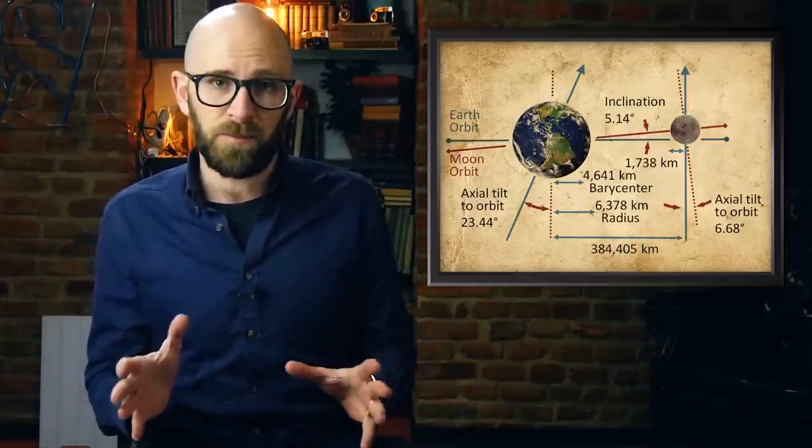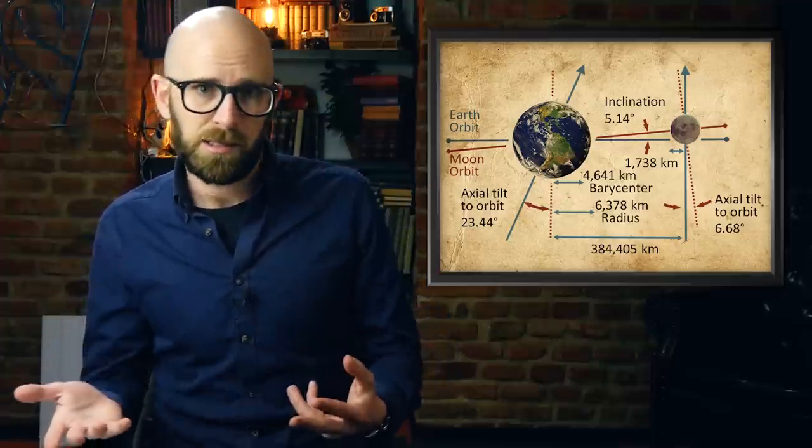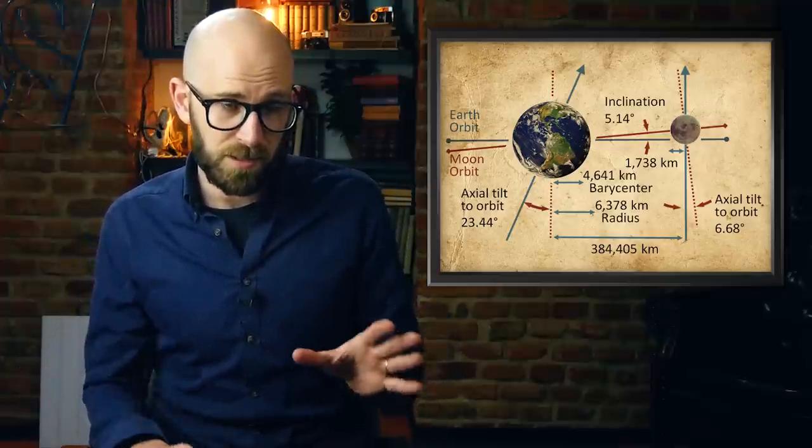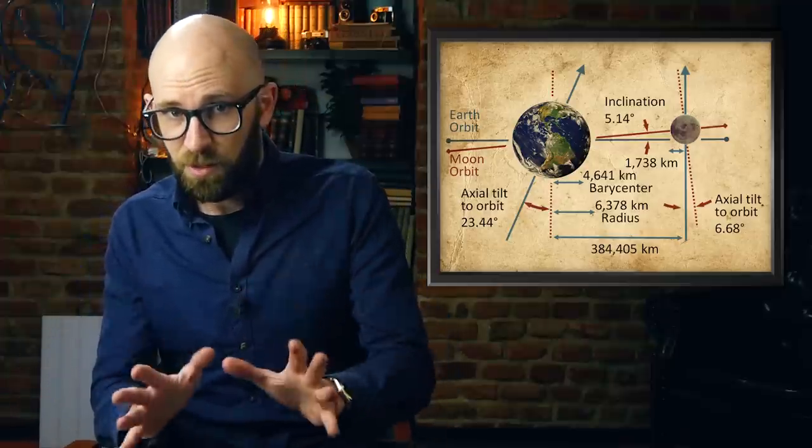How does this work? Simply put, tidal friction. For a slightly less simple explanation, we have to put our science caps on — but it really is fascinating. Think of how the moon causes major tides on the Earth due to the moon pulling at the Earth via its gravitational field. The Earth has this same effect on the moon, and being 81.28 times more massive, the effect is much more powerful.